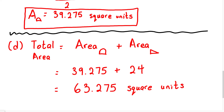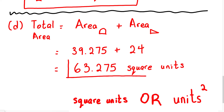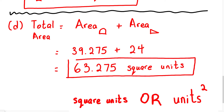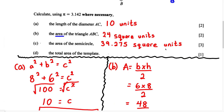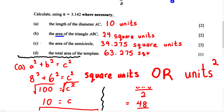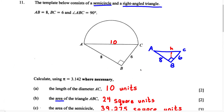The total area of the template is 63.275 square units. This is how you solve a problem that consists of a semicircle and a right-angled triangle.